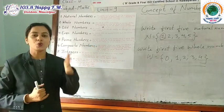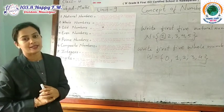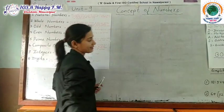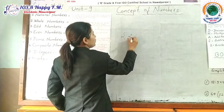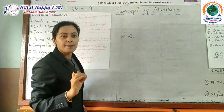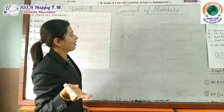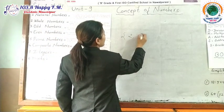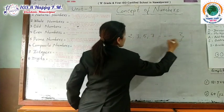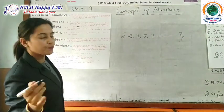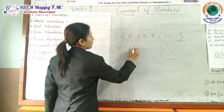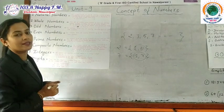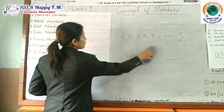The next topic is prime numbers. Prime numbers are those numbers which have only two factors: one and itself. Note that 1 is neither prime nor composite. Prime numbers include 2, 3, 5, 7, and so on. For example, the factors of 2 are only 1 and 2, and the factors of 7 are only 1 and 7 — having exactly two factors makes them prime numbers.